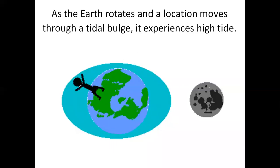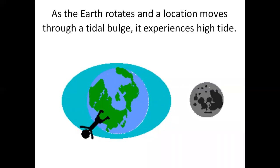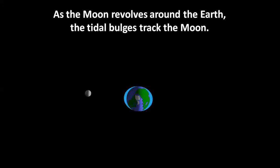As the Earth rotates and a location moves through a tidal bulge, it experiences a high tide. As the Moon revolves around the Earth, the tidal bulges track the Moon. Track means to follow.